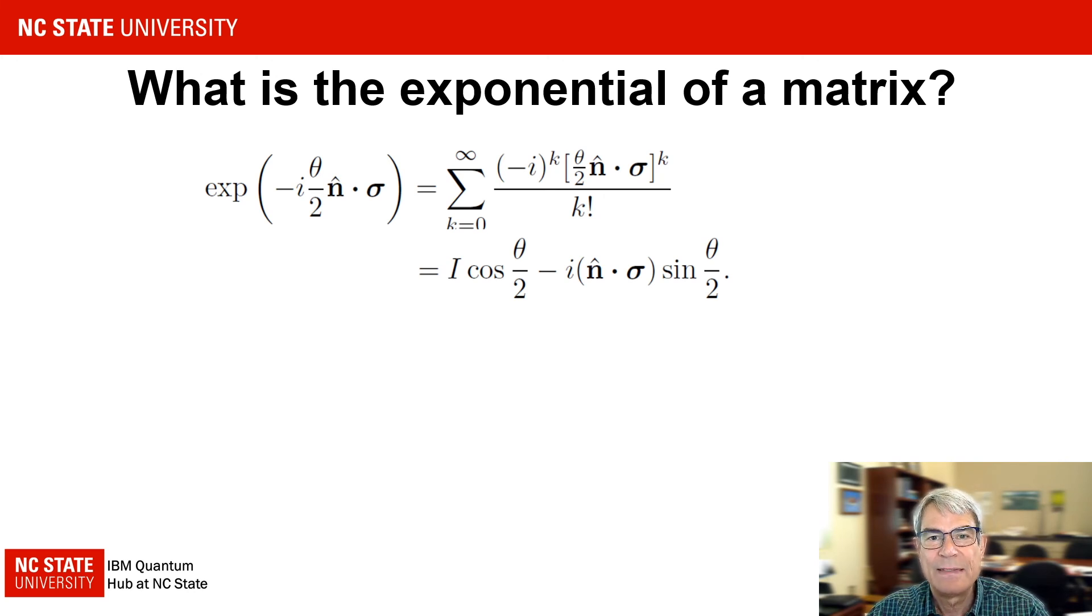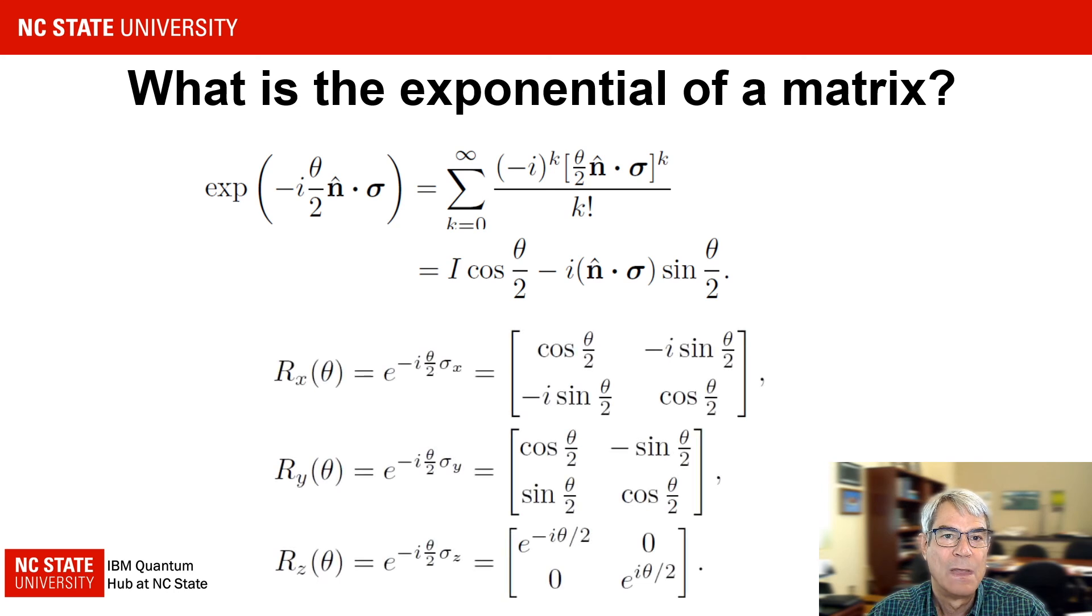This calculation is a bit tedious, but it can be found in most introductory texts on quantum mechanics. This equation enables us to easily construct 2x2 matrices for rotations around the principal axes. Note that these have a similar appearance to classical rotation matrices, but the rotation angle enters as theta by 2 instead of theta.